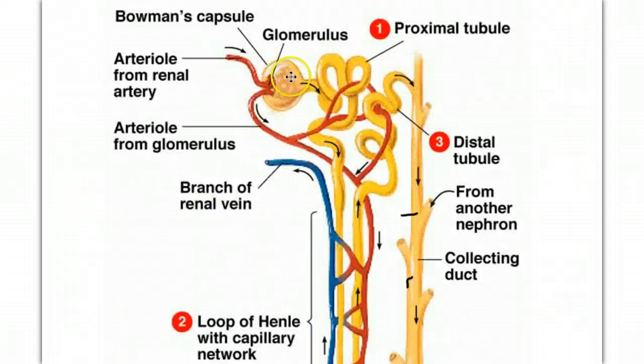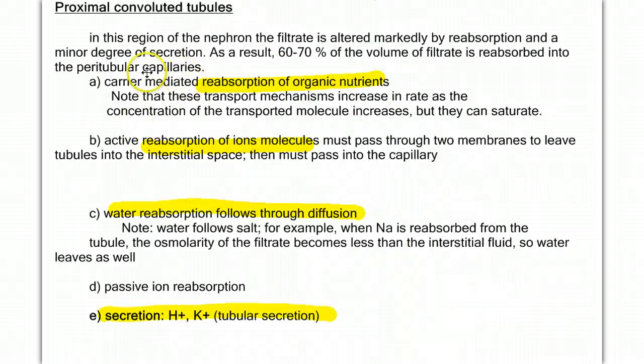So after we leave the Bowman's capsule, we enter the proximal convoluted tubule. And in the proximal convoluted tubule, we're going to reabsorb a great deal of material. We're going to reabsorb organic nutrients. We're going to reabsorb ions and other molecules. And we're going to start to actually recapture a lot of our water. However, we're also going to have some things coming the other direction from the blood into the proximal convoluted tubule, particularly hydrogen ions and potassium ions.